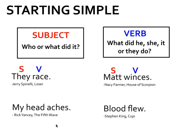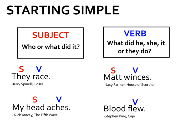This is where it gets tricky. From The Fifth Wave by Rick Yancey, my favorite book that I read this summer: 'My head aches.' Let's start with our verb. What did it do? It aches. What is doing the aching? It's not 'my' — it's 'head.' Head aches. Next: 'Blood flew.' What is it doing? It's flying — it flew. So what flew? Blood. My subject is 'blood' and 'flew' is my verb.